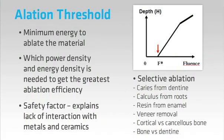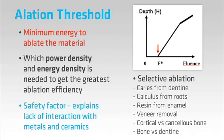A key concept in understanding how the laser works is ablation threshold. This is the minimum amount of energy delivered into a given area that we need to ablate the target. We express this in terms of intensity — that is power density as well as energy density. If we are above this threshold, the target will be cut. If we are below the threshold, the material will not cut; instead it will warm up. We can use this warming effect of low intensities to great benefit, to coagulate and thereby to control bleeding.